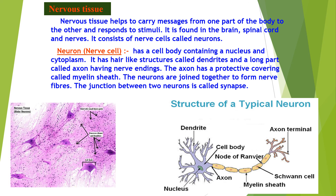The picture shows the actual structure of the neurons present in the nervous tissue and the second picture gives the diagrammatic view of the neuron structure. With this we end today's session. The remaining tissues we will do in the next session. Thank you.